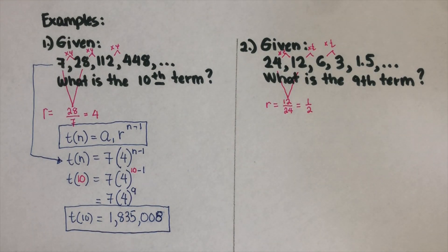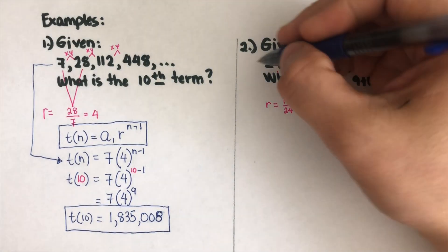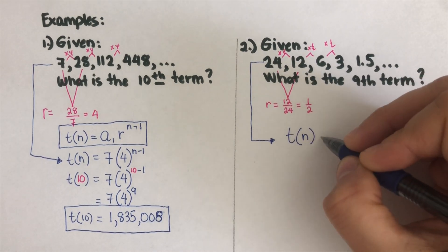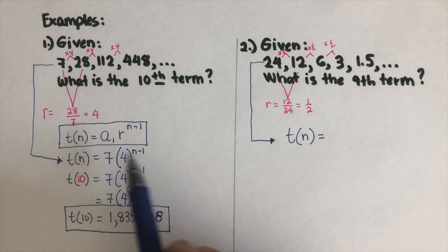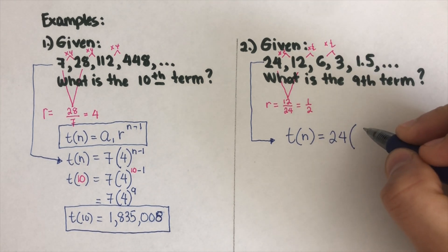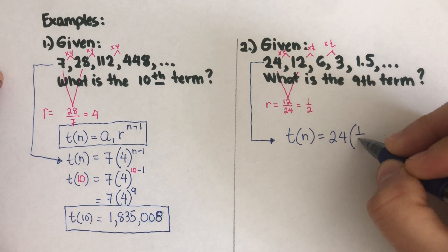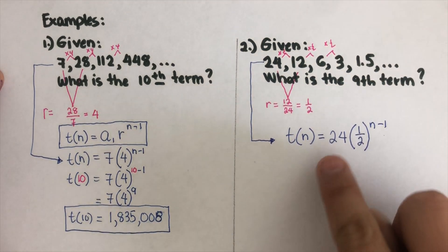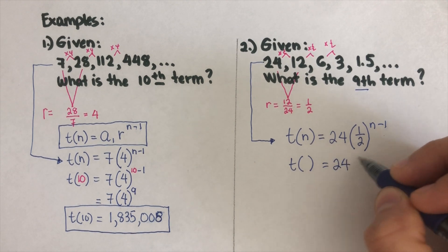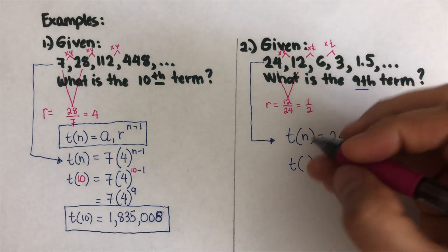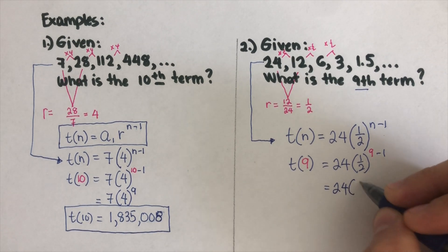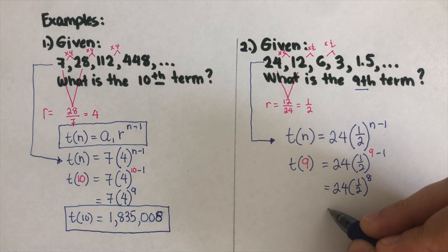Let's write the equation for this problem. The first term a₁ = 24 and r = 1/2, so the equation is t(n) = 24 · (1/2)^(n-1). We are looking for the 9th term, so we substitute n = 9: t(9) = 24 · (1/2)^8.